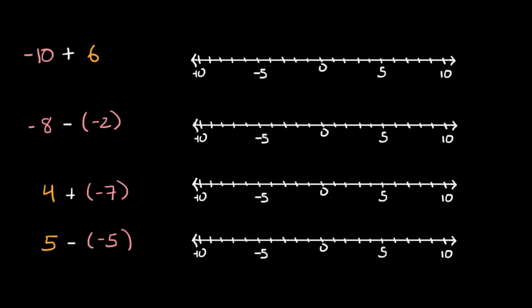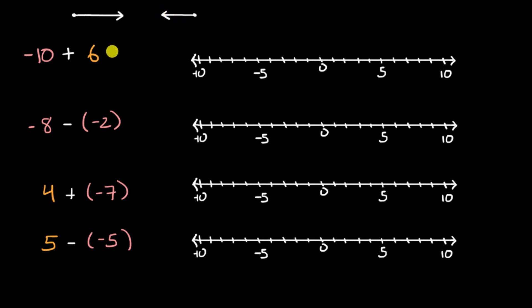In this video, we're going to add and subtract negative numbers on a number line. The important thing to realize is: if you are adding a positive number, you start at some point on the number line and you move that many units to the right. If you are adding a negative number, you start wherever you're starting and then you move that many units to the left — whatever the absolute value of that negative number is. And if you're subtracting either of them, you do the opposite. So we're going to see a few examples of that.